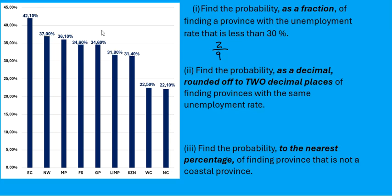Find the probability — this time they want us to write it as a decimal rounded off to two decimal places — of finding provinces with the same unemployment rate. If you look at the bar graph again on the left, which provinces have the same unemployment rate? It would be these two here. So those two provinces have the same unemployment rate. Remember, we always write the probability as a fraction first, so two out of those nine provinces have the same unemployment rate. But we can't just leave it as a fraction this time.